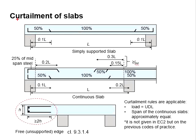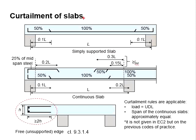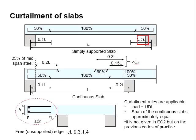This diagram shows the curtailment rules for the simply supported slab. Assuming 100% reinforcement bar is at the mid-span, at both ends you may reduce the amount of reinforcement bar to 50%, starting from 0.1L from the mid of the support.